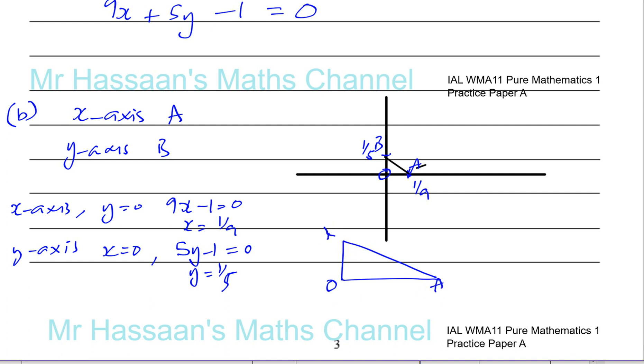The area of the triangle is 1/2 times the base times the height, which is 1/90 square units. I'm going to check the mark scheme just to make sure. Yes, 1/90. That's the answer for that question, and that's correct.